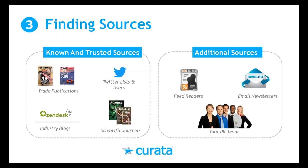Once you pick a topic, find where you'll curate content from. Known and trusted sources include trade publications covering the topic regularly, Twitter lists of people who frequently tweet about your topic, scientific journals, competitor or vendor blogs. Other sources include RSS feed readers, email newsletters you already subscribe to, and your PR team's media monitoring list — they often have trade publications already built up that are highly relevant.